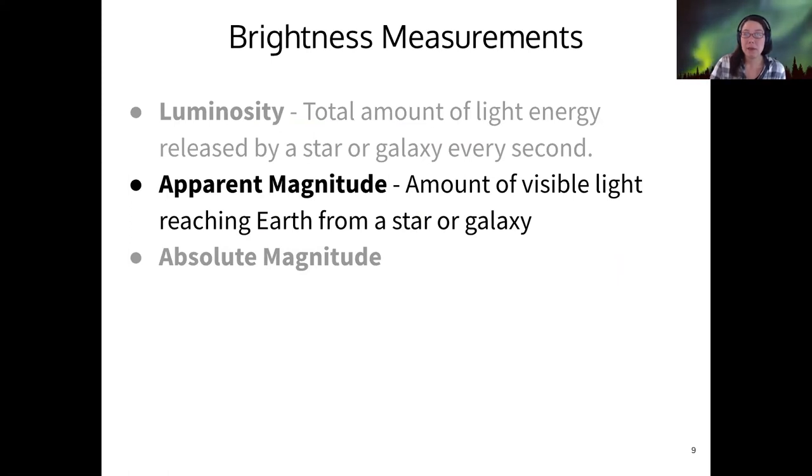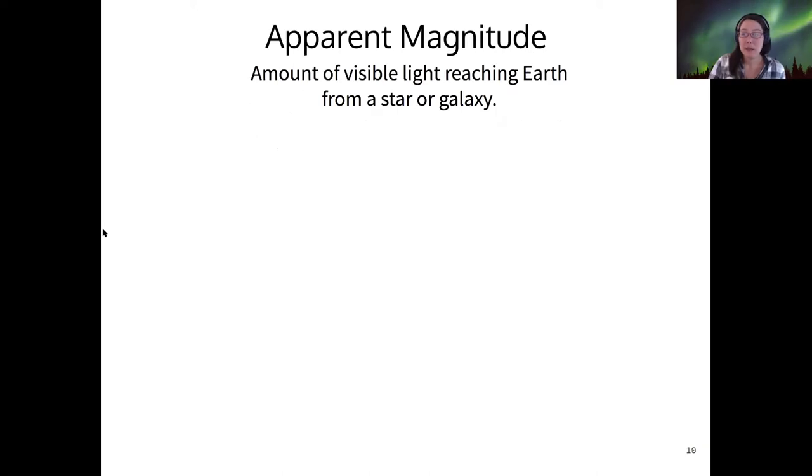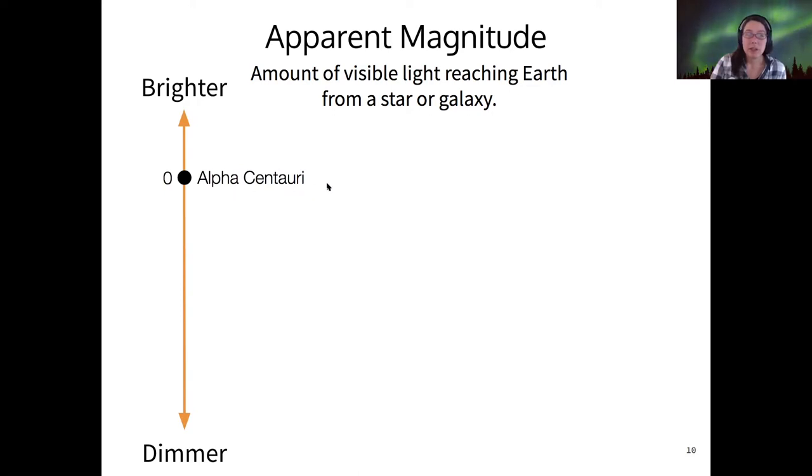The second brightness measurement is called apparent magnitude, and this is the amount of visible light that we receive from Earth from a star or a galaxy. So this is something that we measure, and it's measured on a particular scale that was developed by Hipparchus in Greek times. And in this scale, a star like Alpha Centauri, which is a fairly bright star in the sky, has a magnitude of zero. But otherwise, there's nothing special about zero.